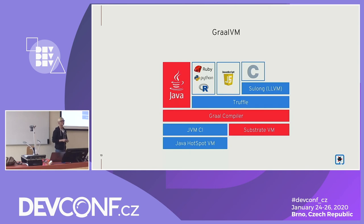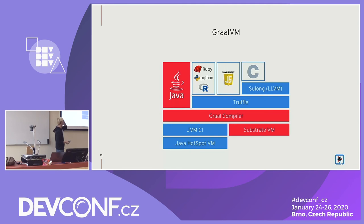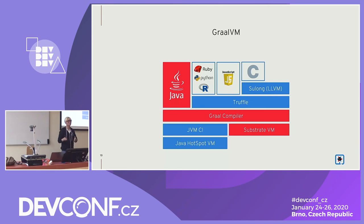GraalVM is invented by Oracle and has two versions: community version and enterprise version. Enterprise version supports more enterprise-grade functionality. We just use the compiler. If you've tried using GraalVM technology with your application, it's really hard to create the GraalVM configuration and annotations for the runtime.